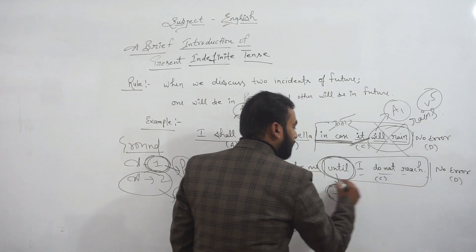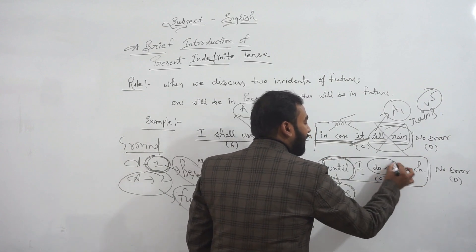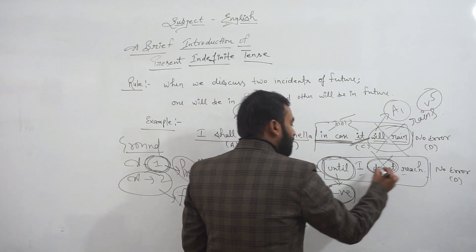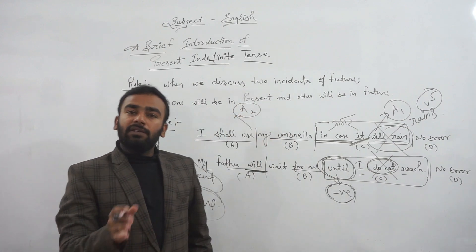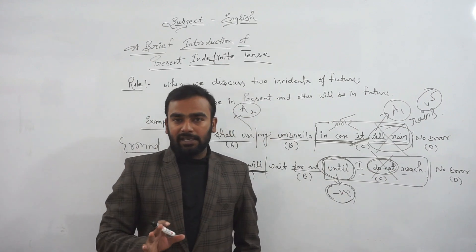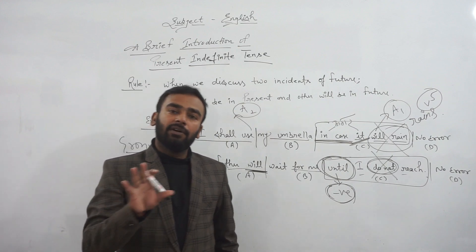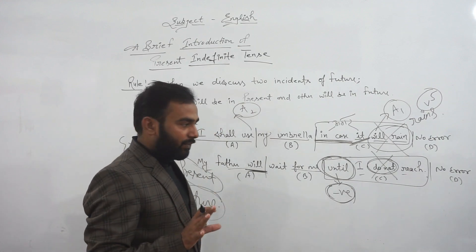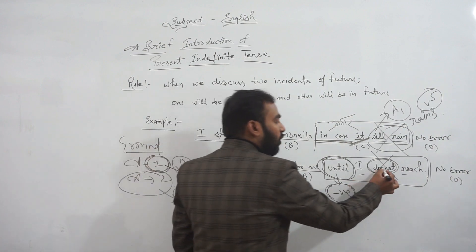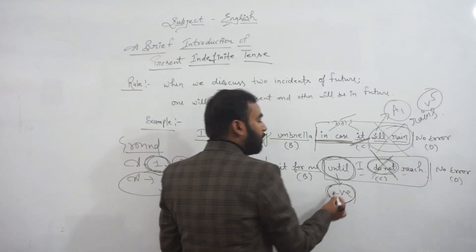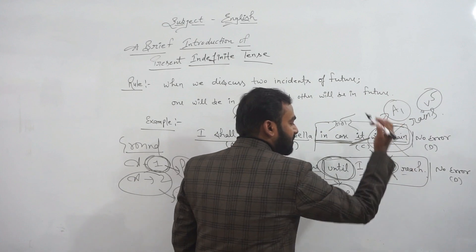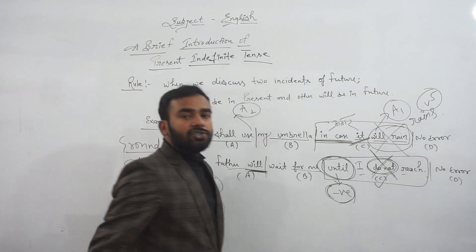Similar to 'until' is 'unless'. Both 'unless' and 'until' have their own negative sense. Both are negative. So there should not be 'do not' here. We will simply say 'until I reach'. So the error part is C. Am I clear till this point?